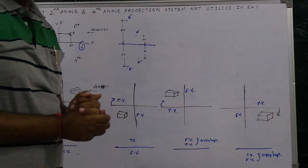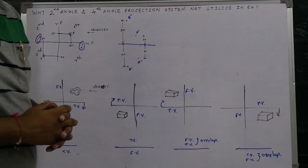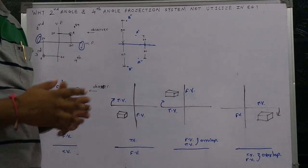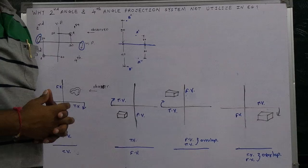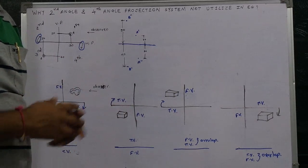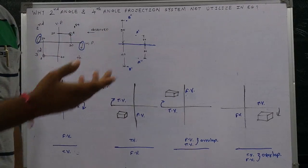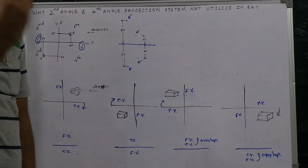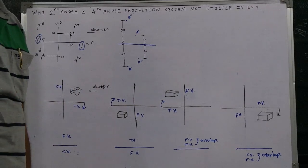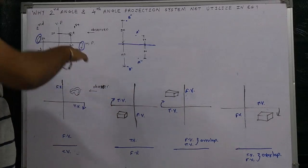Hello friends, my name is Javir. Today we are going to discuss one of the basic questions of engineering graphics: why the second angle and fourth angle projection systems are not utilized in engineering graphics, and why only first angle and third angle are used. This is a very basic question that many students are not able to answer, so I am sharing this video.